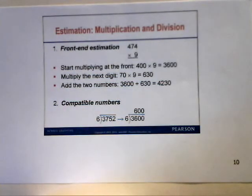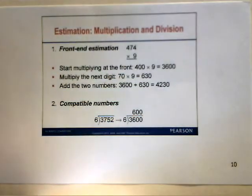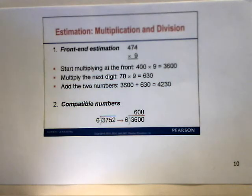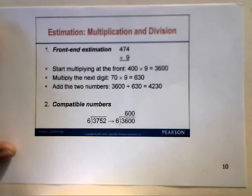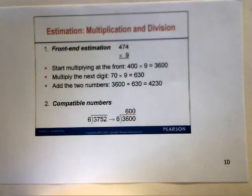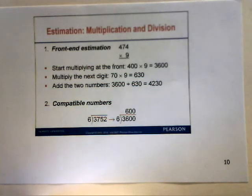For estimation with multiplication and division, front-end estimation for 474 times 9 starts with 400 times 9 equals 3,600, then 70 times 9 equals 630; so 3,600 plus 630 gives an estimated product of 4,230. For compatible numbers in division, for 3,752 divided by 6, use 3,600 — a multiple of 6 — so 3,600 divided by 6 equals 600, meaning the quotient is approximately 600.